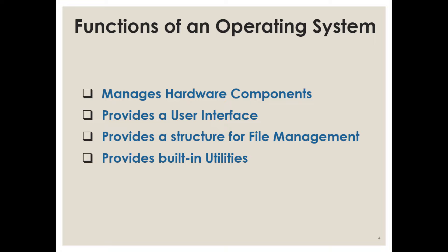The functions of an operating system: first, it manages the hardware components — it's the software that manages all those physical hardware components in your PC. It provides the graphical user interface (GUI), it provides a structure for file management — files and folders in the C drive or D drive — and it provides some built-in utilities as well.